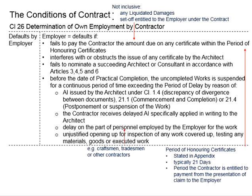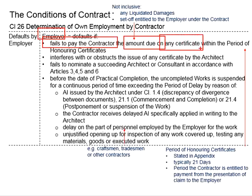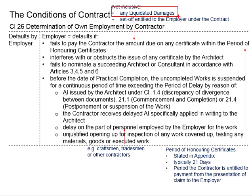We first need to establish the defaults by the employer. An employer is considered in default if one of the following happens. First, if the employer fails to pay the contractor the amount due on any certificate within the period of honouring certificate. This means the employer does not pay the contractor for the work done within a certain stipulated duration. The amount to be paid will be for work done by the contractor, not inclusive of any liquidated damages or set-off entitled by the employer.